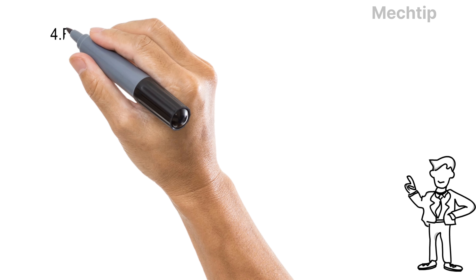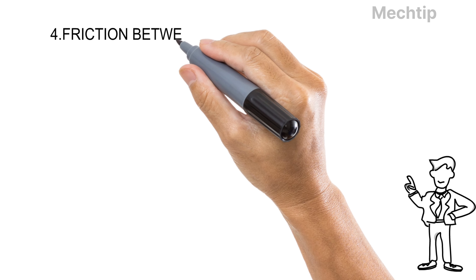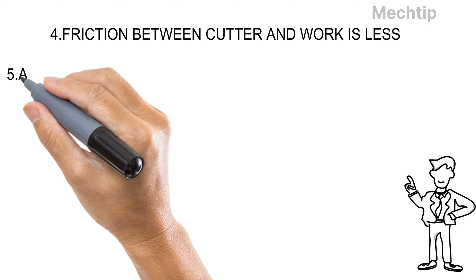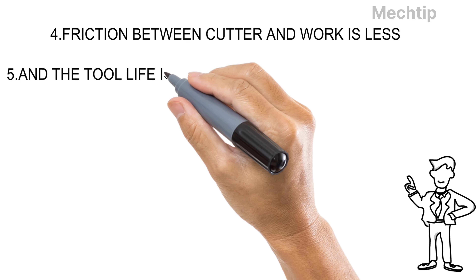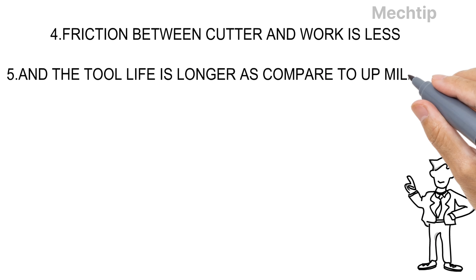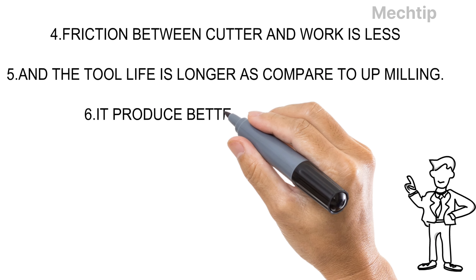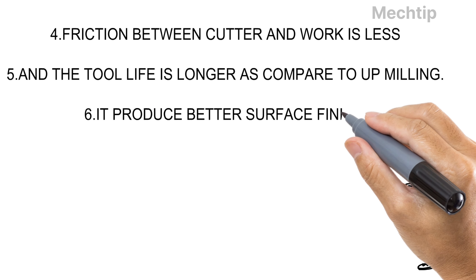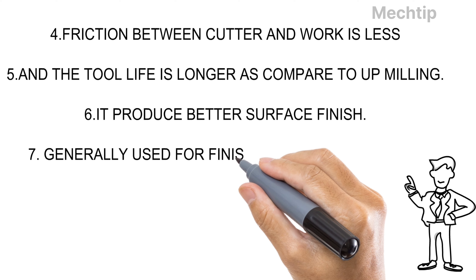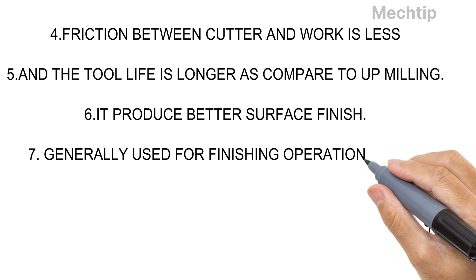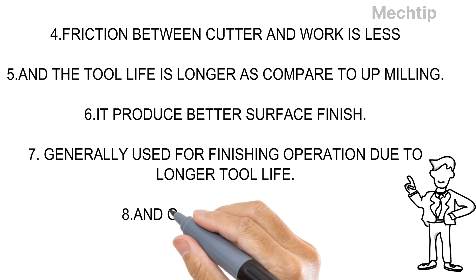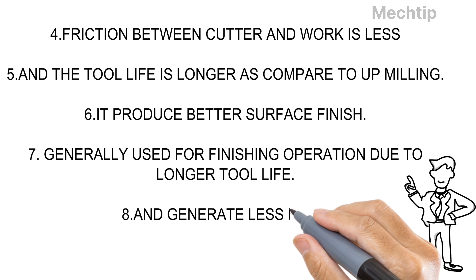In down milling, the friction between the cutter and the workpiece is very low, so the tool life is longer compared to up milling. This process produces a better surface finish, and hence these operations are generally used for finishing. Heat generation is also very less compared to up milling.